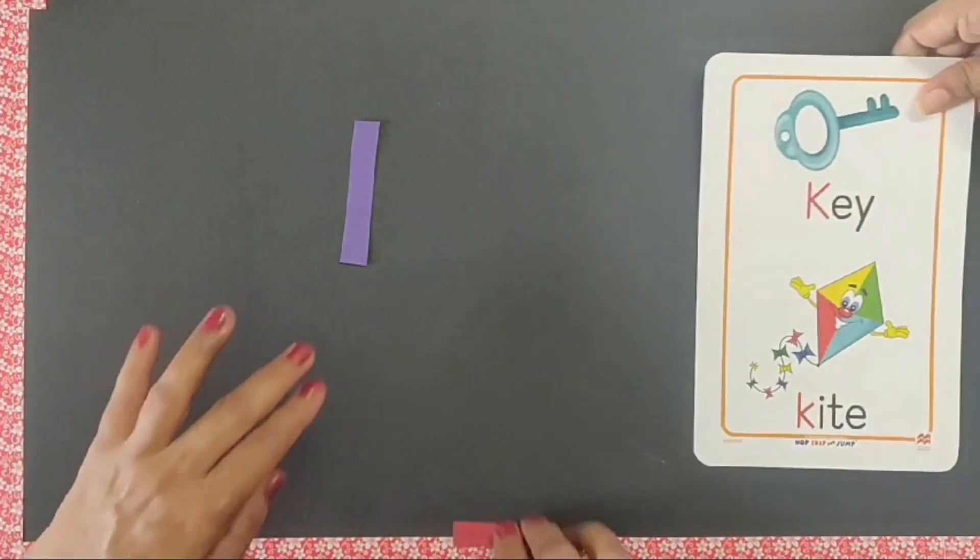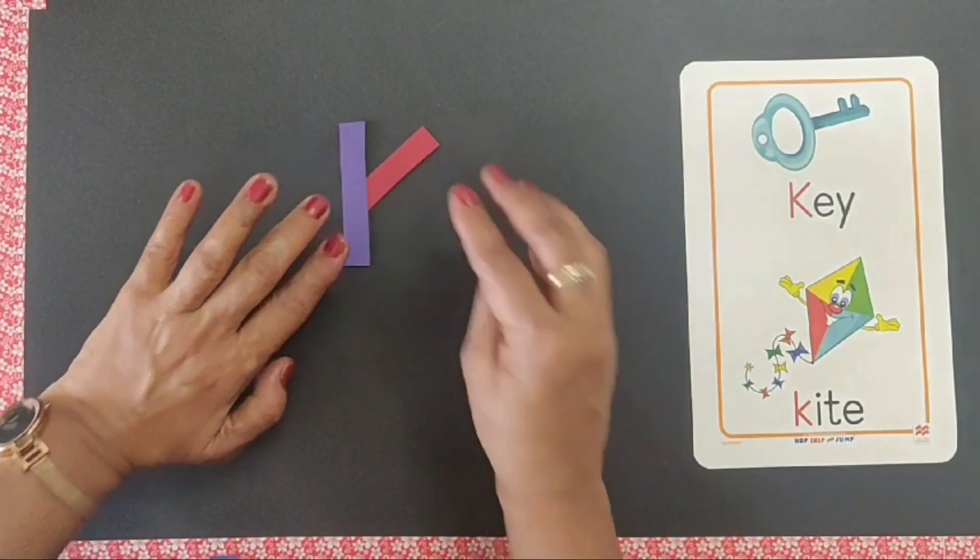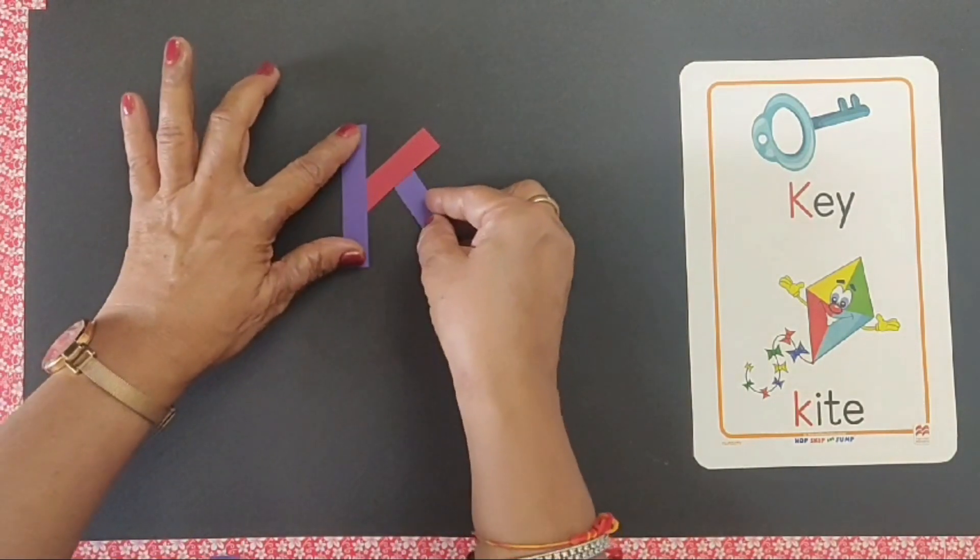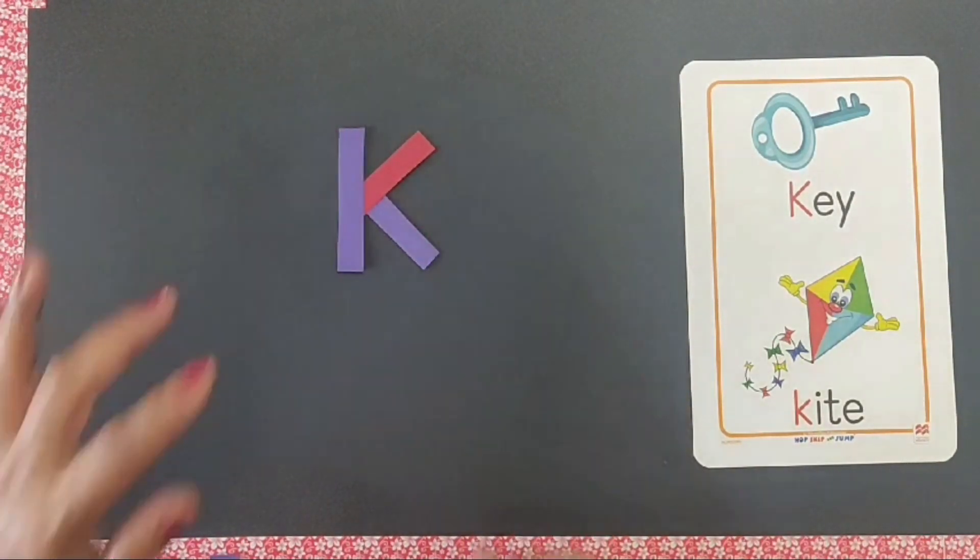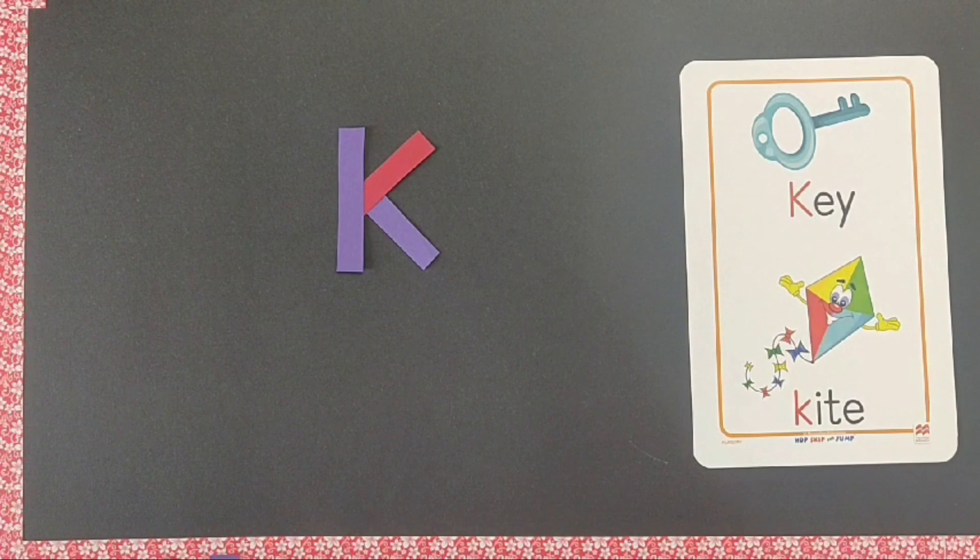Now one strip big, two smaller medium size strips. This makes K. K says kuh, K for key.